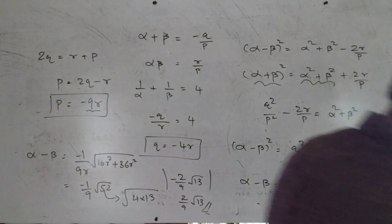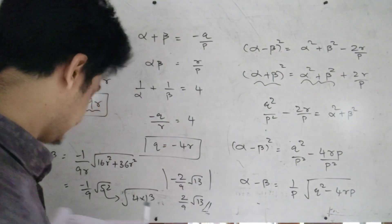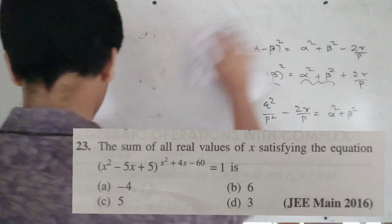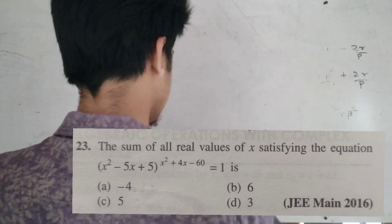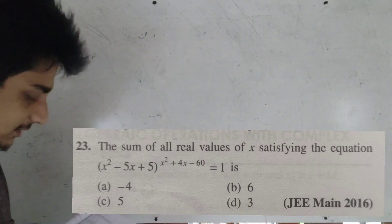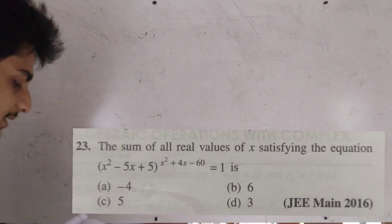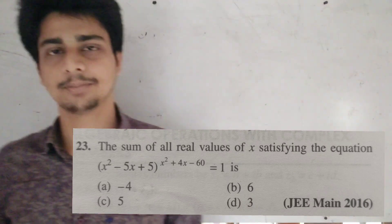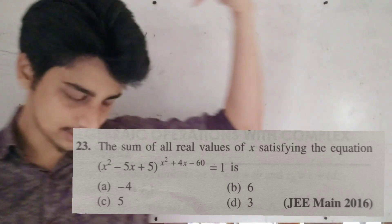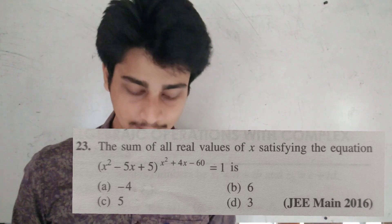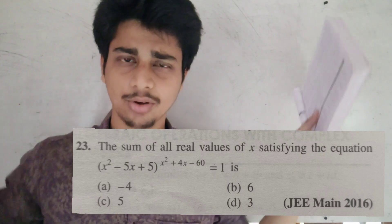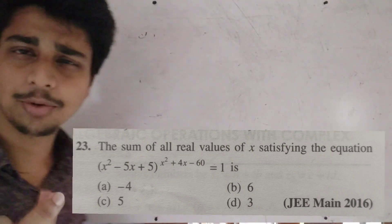The next question: find the sum of all real values of x satisfying (x² − 5x + 5)^(x² + 4x − 60) = 1. For this we use the fact that a^b = 1 when: base = 1, base = −1 with an even exponent, or exponent = 0 — giving us three conditions.